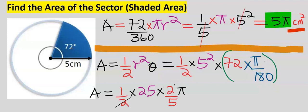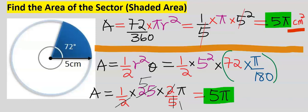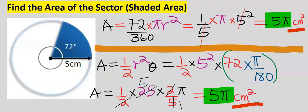Simplifying: the 2s cancel, the 5 here becomes 1 and the other 5 remains 5, giving an answer of 5π. The unit is centimeters squared. You can see that using either formula gives the same answer, as long as you know how to convert between degrees and radians.